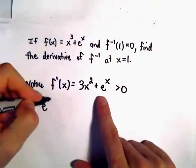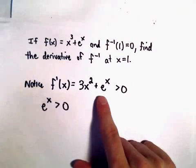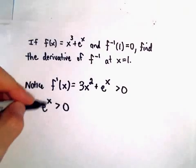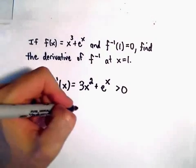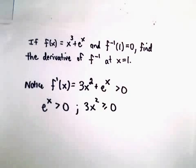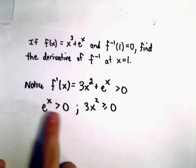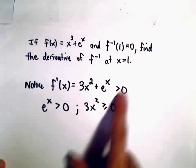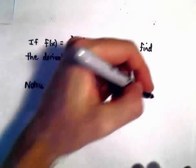And the reason is e to the x is greater than 0 for all x. If you plug any number into the exponential function e to the x, you always get something greater than 0. 3x squared is certainly greater than or equal to 0. And when you add them together, since this one's already positive, if you add something 0 or bigger, we'll always get something greater than 0.